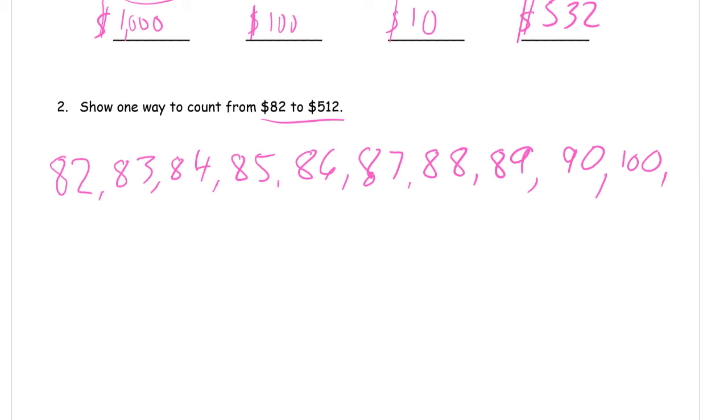And now I can count by hundreds. One hundred, two hundred. I know that looks like a zoo, not two hundred. There we go. Two hundred, three hundred, four hundred, five hundred.